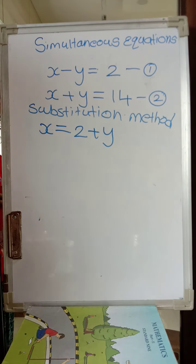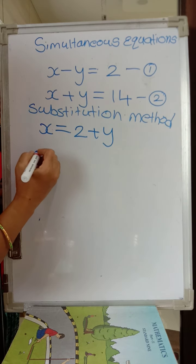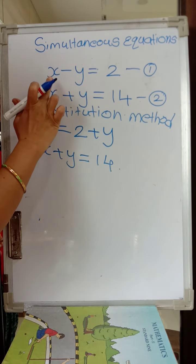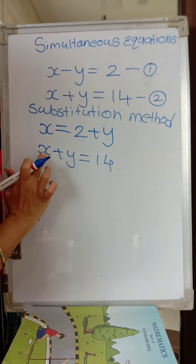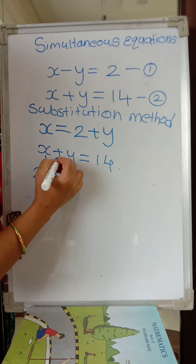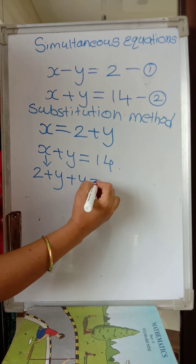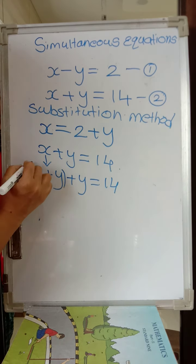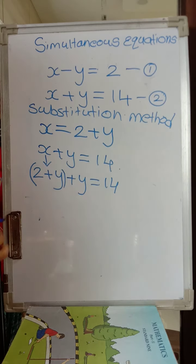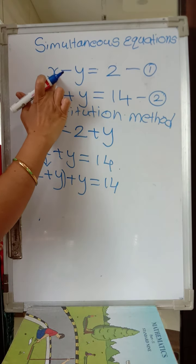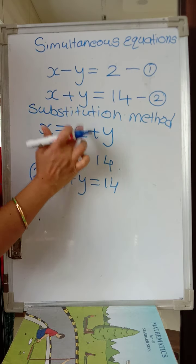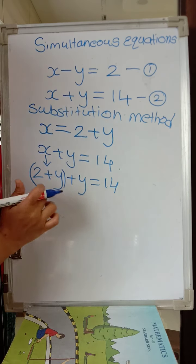Now take equation 2: x plus y equals 14. For x, substitute the value we found: write 2 plus y in place of x. So we have (2 plus y) plus y equals 14. One important thing: since we used equation 1 to find the value of x, we substitute that x value into the other equation — equation 2.